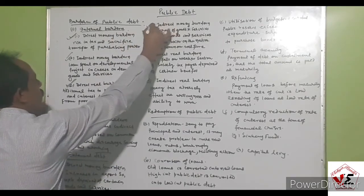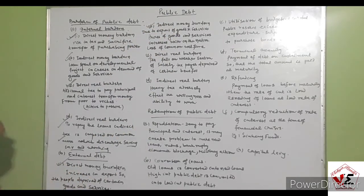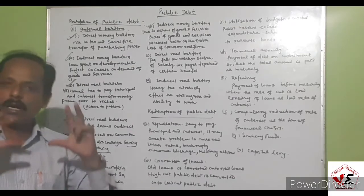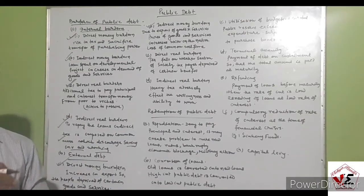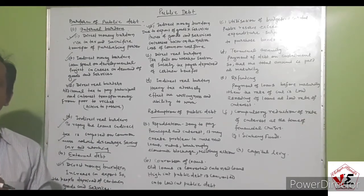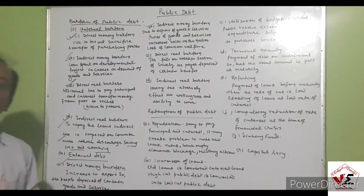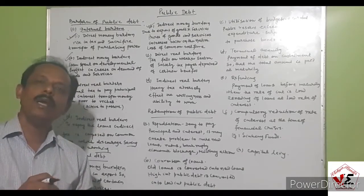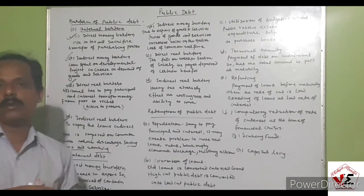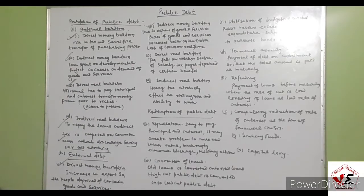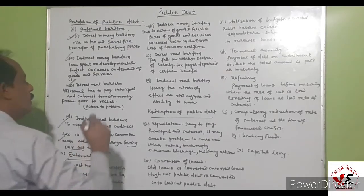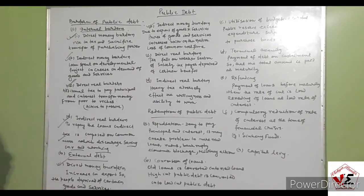The indirect money burden of external debt: due to the export of goods and services, the prices of goods and services increase within the nation. As a large quantity of goods is exported to other nations, the amount available domestically decreases, so prices rise due to increased demand. The people have to pay more for those products — that is the indirect money burden of external debt.